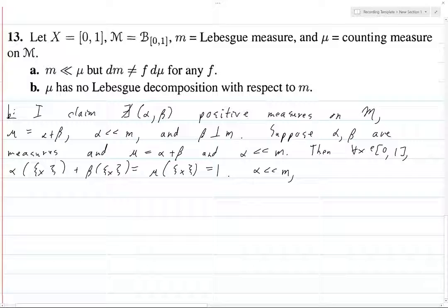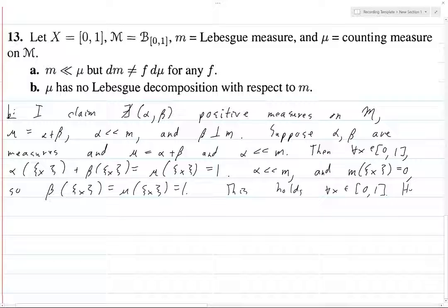Now, alpha is absolutely continuous with respect to m, and the Lebesgue measure of a singleton point equals 0, so beta of x equals mu of x equals 1. This holds for all x in your interval from 0 to 1. Hence, in fact, beta equals mu.